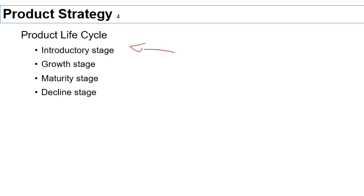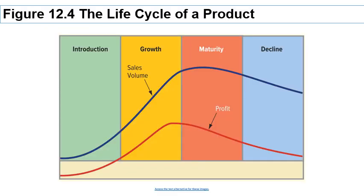Here you have the typical picture used to depict the product life cycle. The bottom axis is time — it starts at zero when the product is introduced into the marketplace. The y-axis shows either units sold (the blue line) or dollars (the red line). Note that this is not for a specific product but for the product category — for example, all laptops, not a specific model.